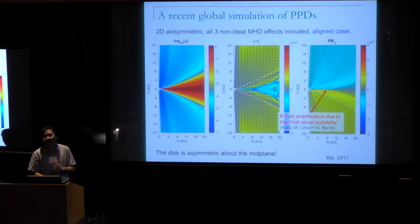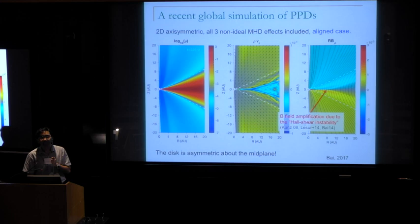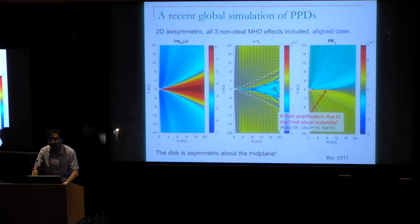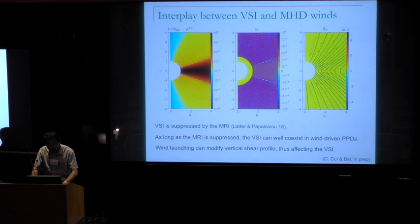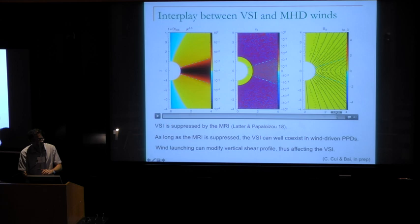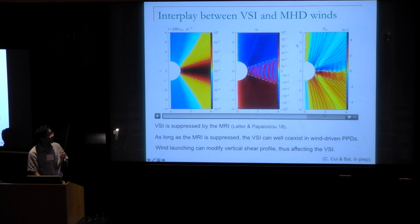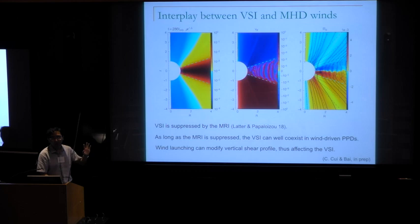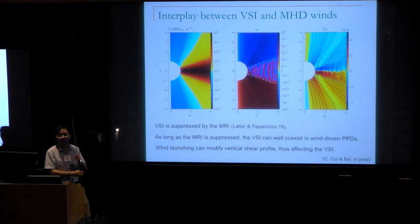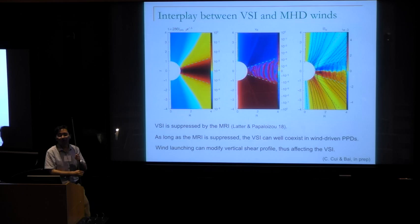Another question: why doesn't the Hall shear instability's asymmetric flows affect VSI density perturbations? The answer is that the VSI simulation shown did not include Hall — it used pure ambipolar diffusion. It's a numerical experiment in a clean environment with a laminar wind from ambipolar diffusion alone, to test whether VSI can develop. More realistic simulations including all effects are needed.